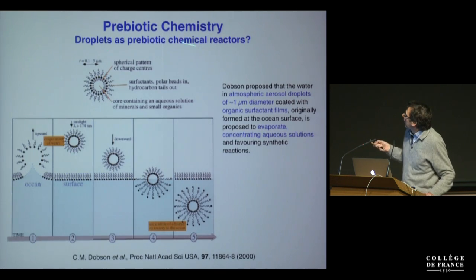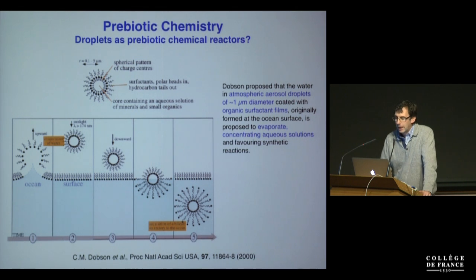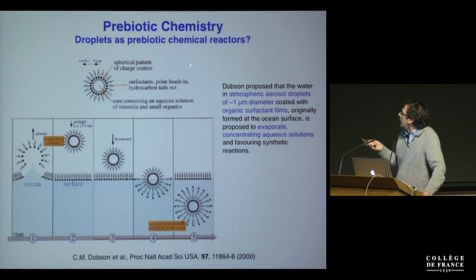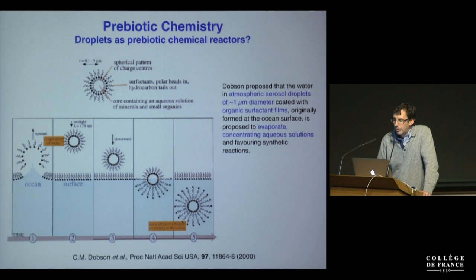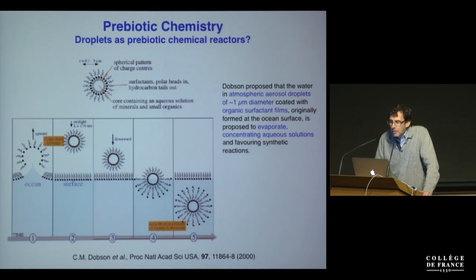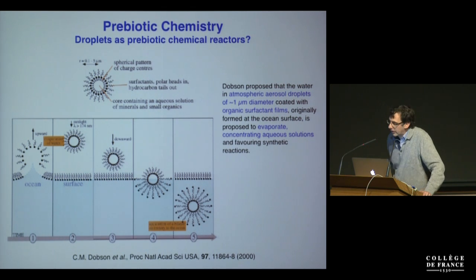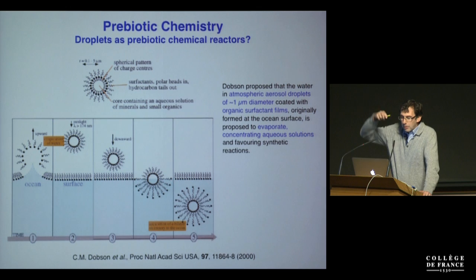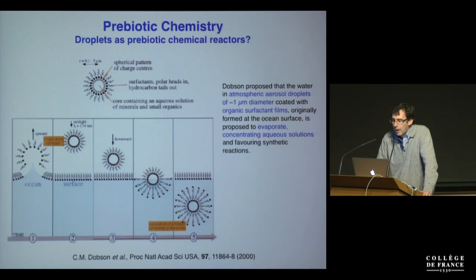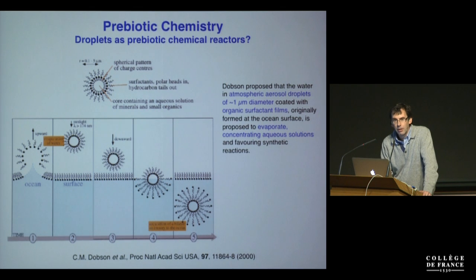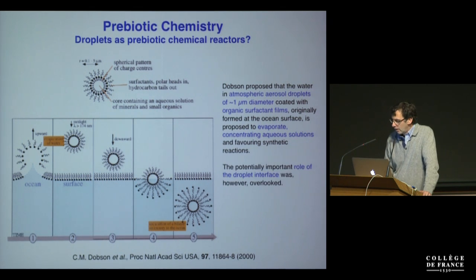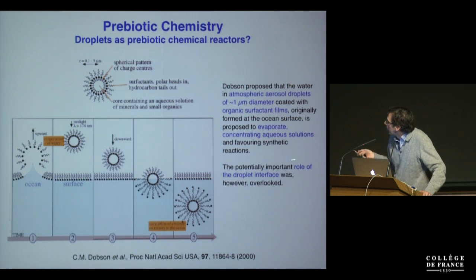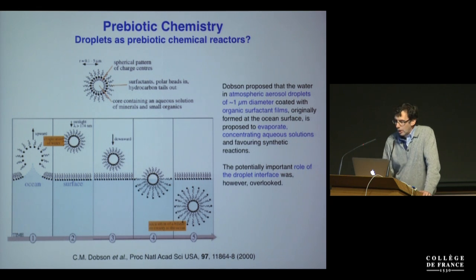But what if droplets might have been prebiotic chemical reactors? A few years ago, Chris Dobson proposed that water in atmospheric aerosol droplets, which are about a micron in diameter, originally formed at the ocean surface, might go into the atmosphere and evaporate, concentrating aqueous solutions and therefore favoring synthetic reactions. At the time, the potential important role of the droplet interface was overlooked, even though this is a small droplet with a very high surface-to-volume ratio.